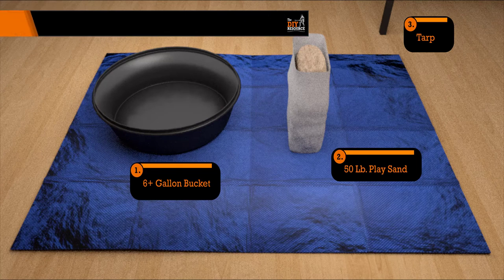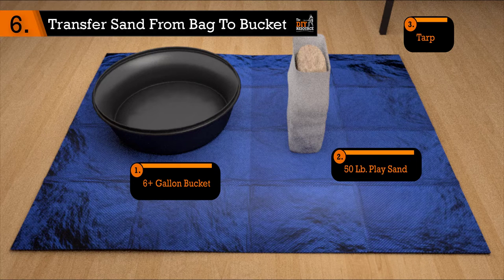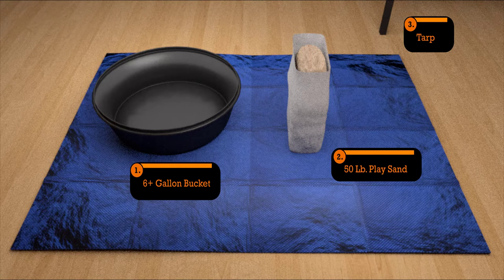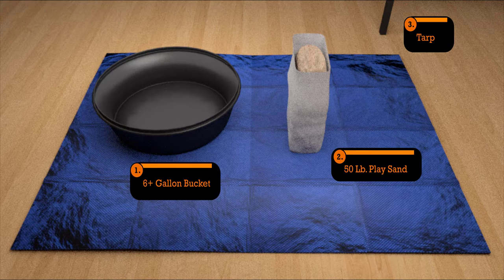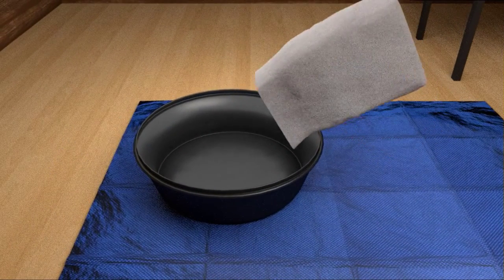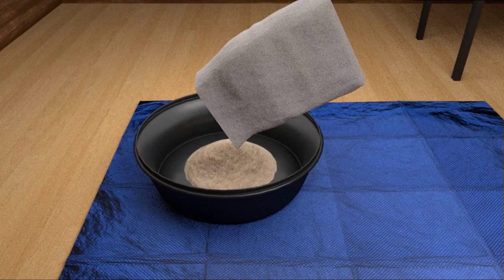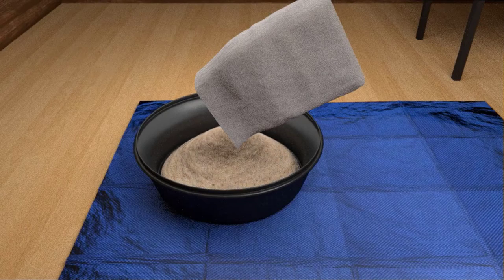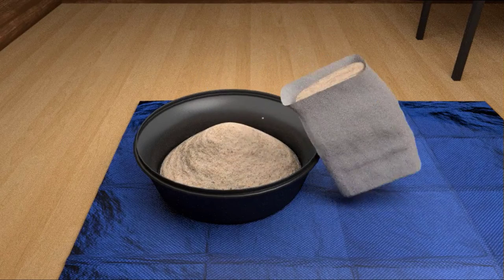Step 6. Transfer play sand from bag to bucket. For this step, your goal is to pour your sand into a bucket so that you can more easily scoop the sand into the PVC chamber that you will create in Step 7. Simply open your play sand bag and pour the contents into your bucket. I recommend doing this over a tarp as seen in the animation.